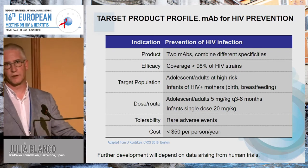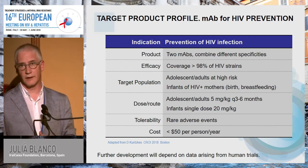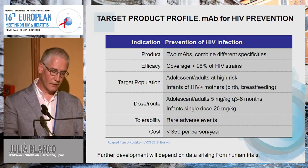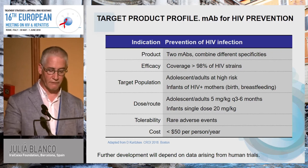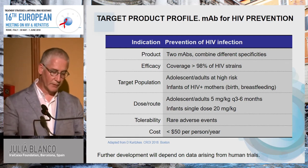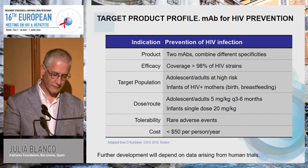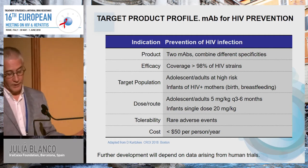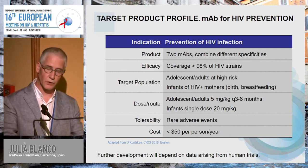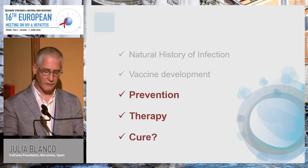Target populations include young and adult people at high risk of HIV infection, and infants from HIV-positive mothers. The dose should probably be 5 mg/kg every three to six months, ideally six months; in infants, a single dose of 20 mg/kg may suffice. Tolerability should be good with rare adverse events, and cost should ideally be lower than $50 per person per year—though that may not be achievable.